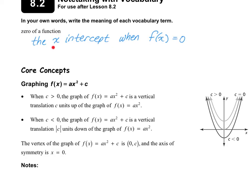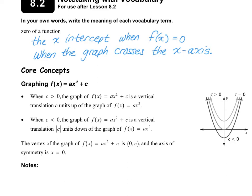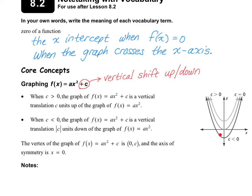A zero of a function is the x-intercept when the function is equal to zero. Another way to say this is when the graph crosses the x-axis. If you remember back when we talked about translations of functions, if you add or subtract a number off of the end of the function, it's going to be a vertical shift up or down by that number. If that number is greater than zero, you're going to translate the graph up. And if you have a negative number, you're going to be shifting it down that amount.